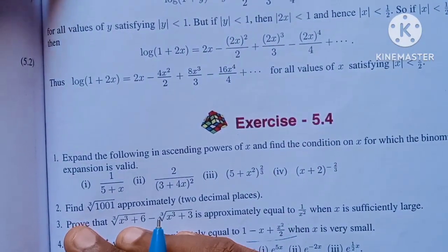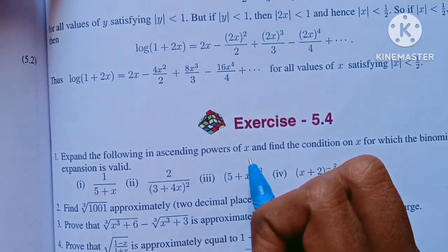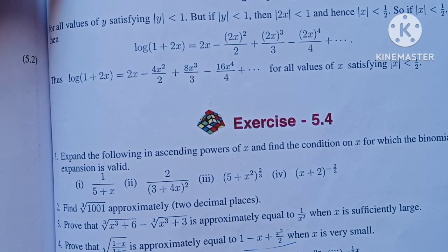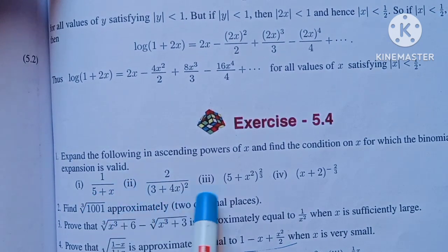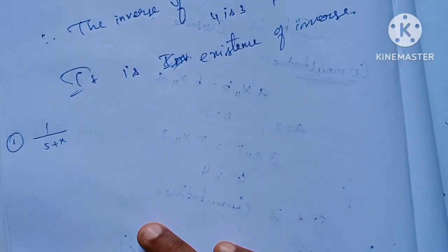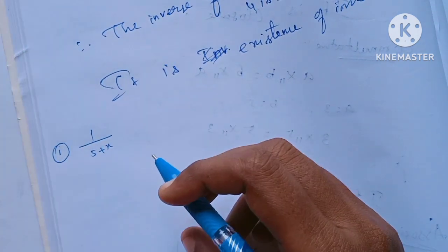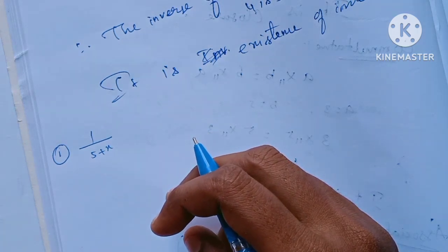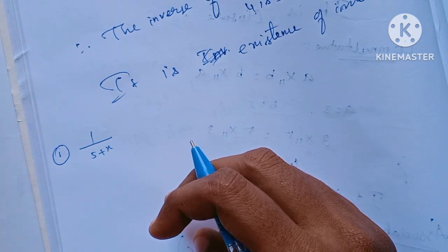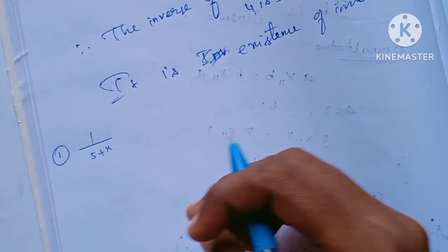Exercise 5.4. The first question is about expanding in ascending powers of x and finding the condition on x for which the binomial expansion is valid. I will tell you the binomial expansion. There are some formulas for (x+a), (a+b), and (1+x). Mostly we will use the formula from section 5.3 and solve all the examples using this formula.